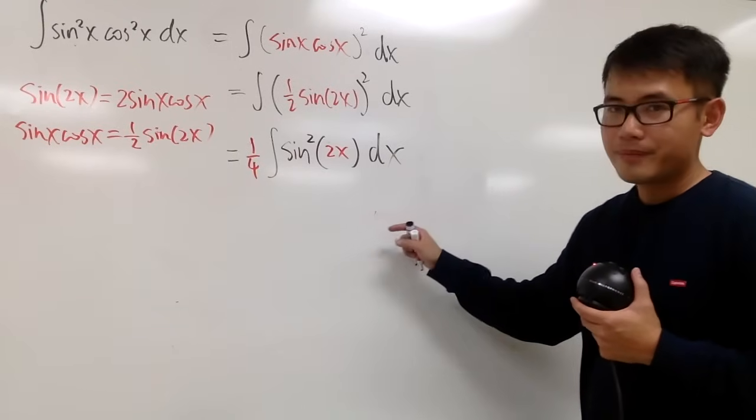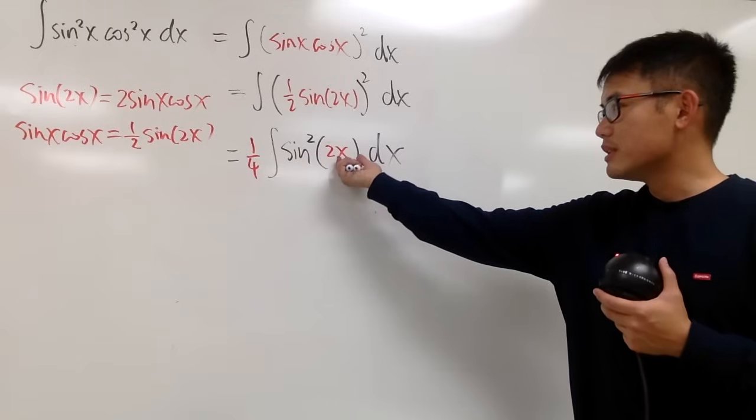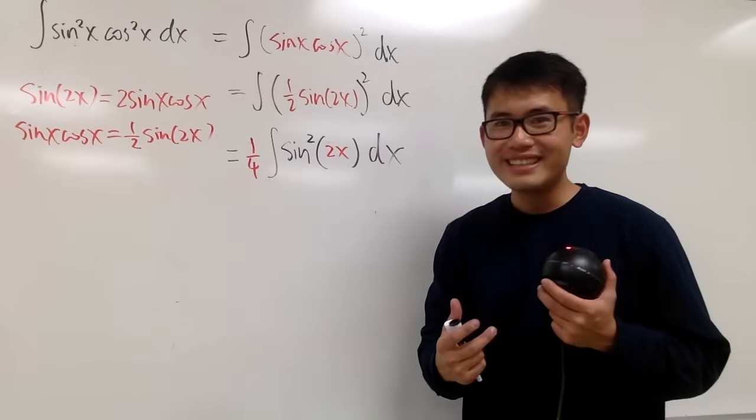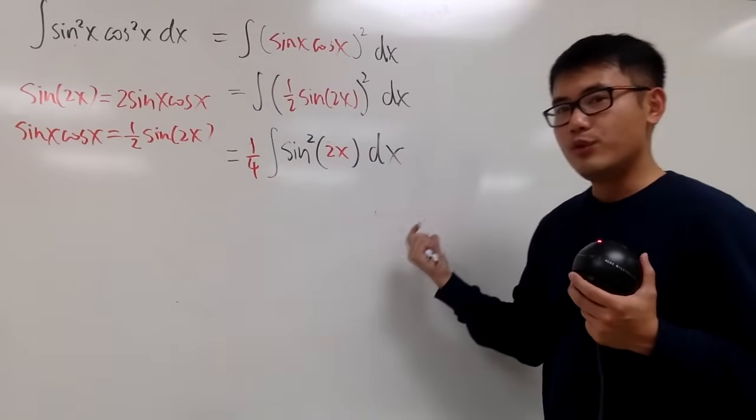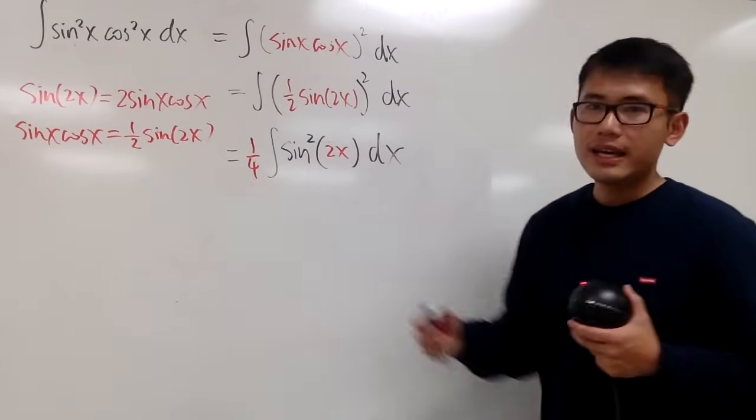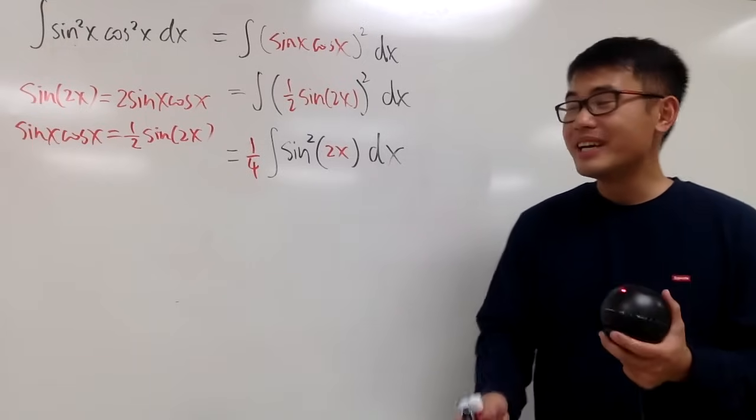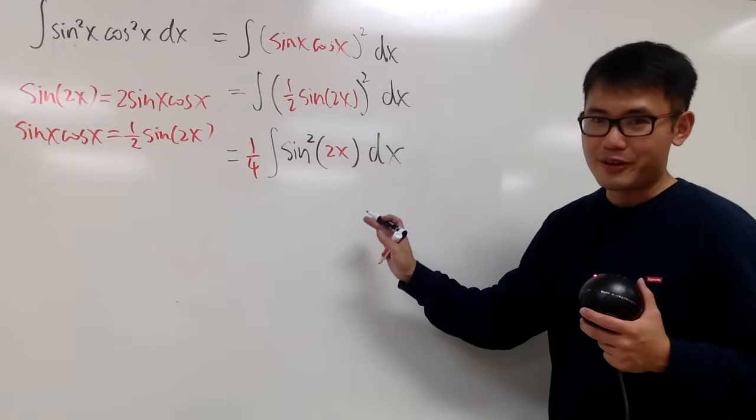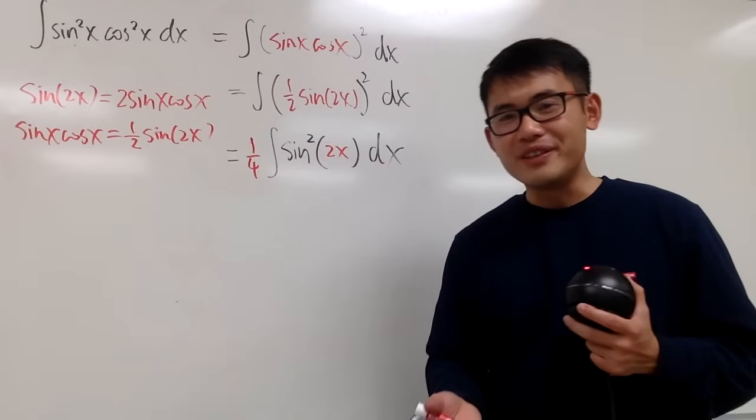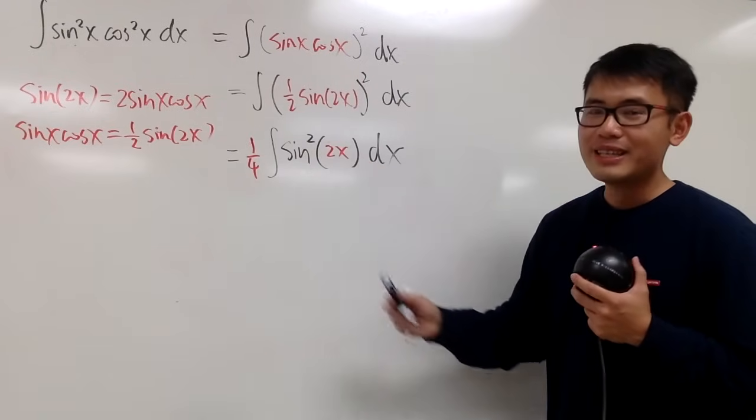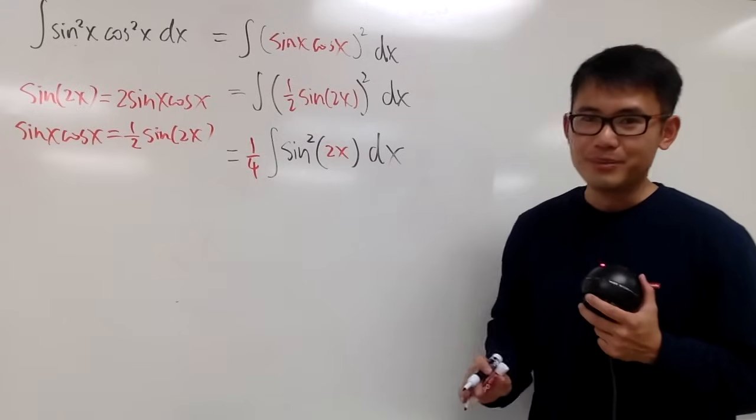So now the question becomes, how can we integrate sine squared? And notice that the input is just 2x. It's a constant multiple with x, right? So you can do some u sub if you would like. Let u equal to 2x, and then get du in terms of dx. But I will let you guys continue, okay? Because we don't have to do that right here.